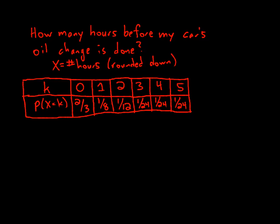And this example is how many hours before my car's oil change is done. And this is based off a personal experience. And this is a theoretical, hypothetical probability distribution for the random variable x, which is how many hours it takes for my oil change to be completed. I'm going to round that down. For example, 45 minutes would be counted as 0 hours.